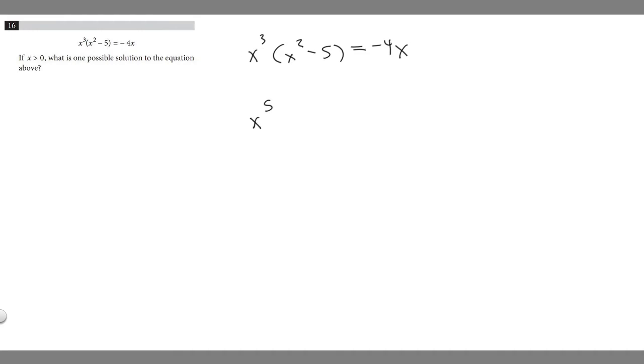So x cubed times x squared is going to be x to the fifth, because when you multiply variables together with the same base, you can add their exponents. So 3 plus 2 is 5. And then x cubed times minus 5 is going to be minus 5x cubed. And then this is equal to minus 4x.